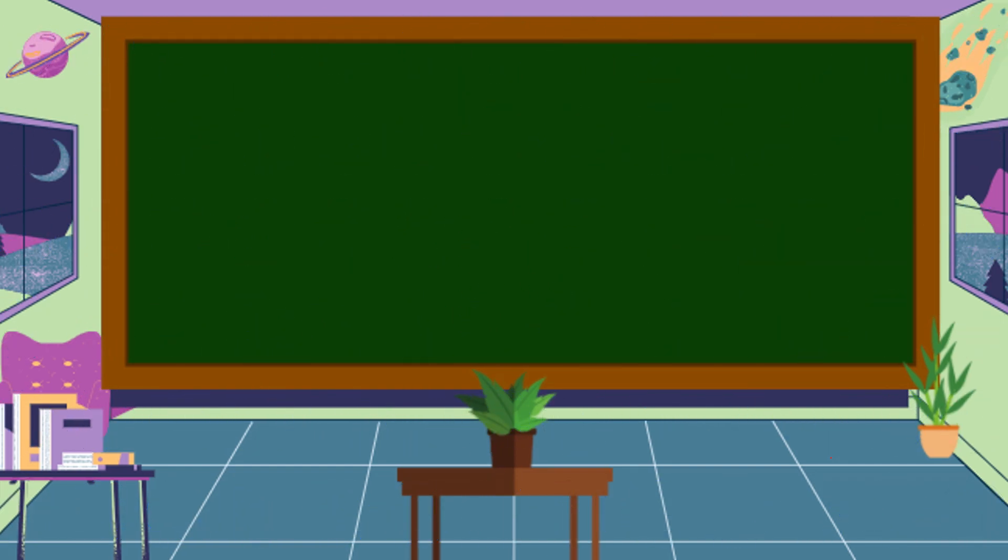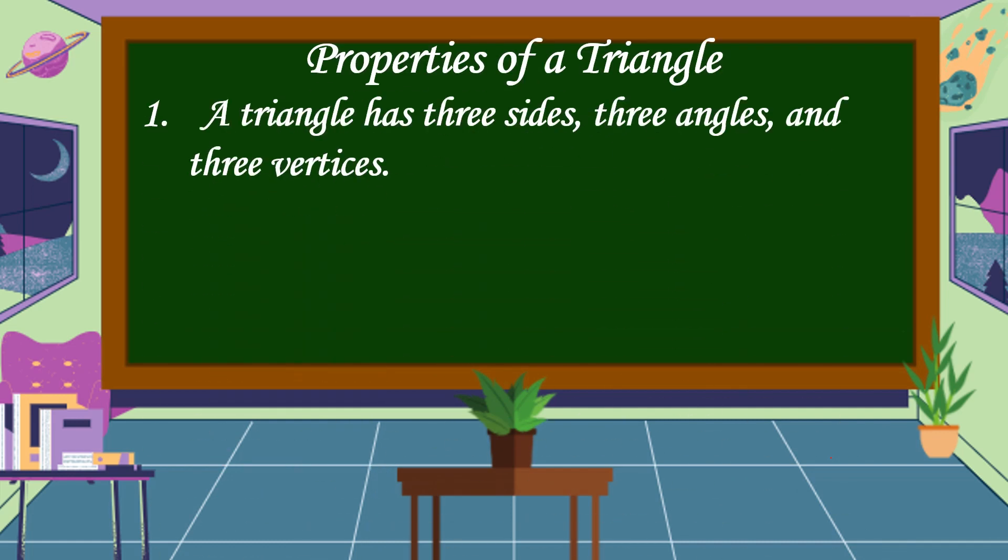Let's study the properties of a triangle. The first property is a triangle has three sides, three angles, and three vertices.